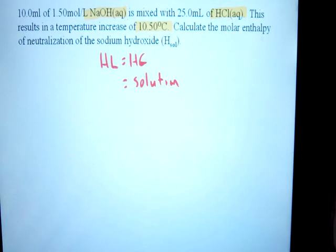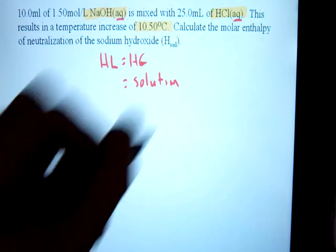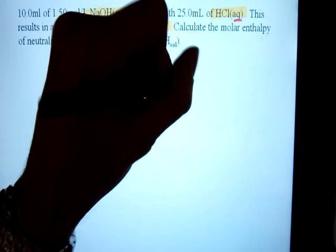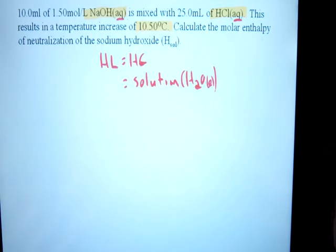So what we're going to say is the whole entire solution has changed temperature. Okay well then what is a solution? That's kind of vague. So if you notice, these are aqueous solutions. So what are they mainly composed of? Not NaOH, not HCl, they're mainly composed of water. So the water is the surroundings, the environment of this solution, and it is what's going to be changing temperature.